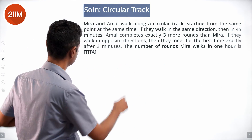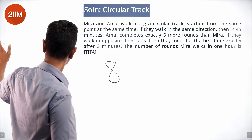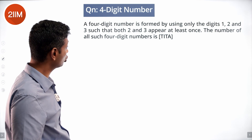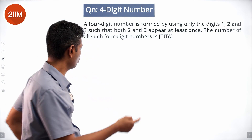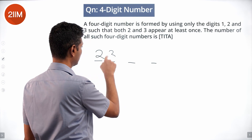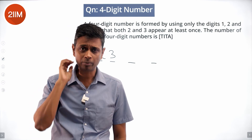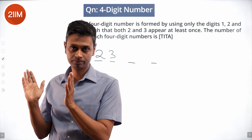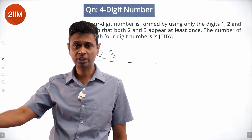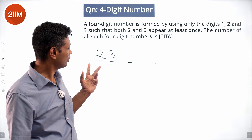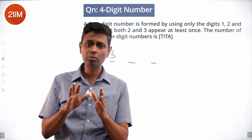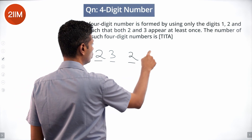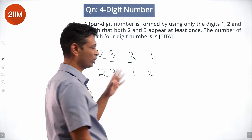A 4-digit number is formed using only the digits 1, 2, and 3 such that both 2 and 3 appear at least once. I'll think about what the digits are, and then how many ways they can be arranged. Since 2 and 3 must appear, the remaining 2 positions can be filled from {1, 2, 3}.